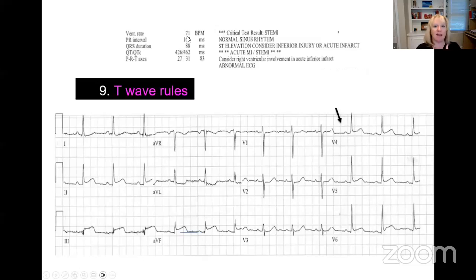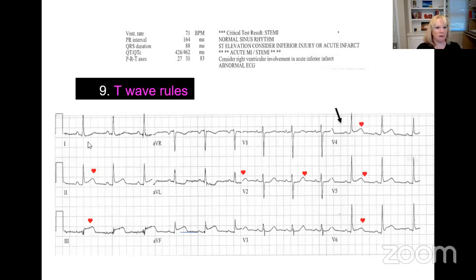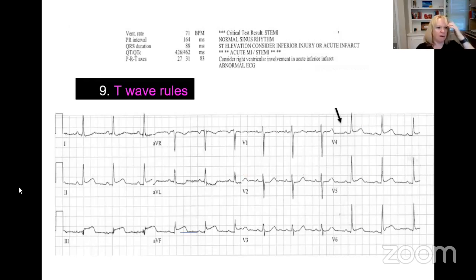Step nine is the T waves, which are also really important. The T wave rule: T waves should be upright in all leads except two. They should be inverted in AVR and in V1. In this EKG, V1 is actually upright, which is not normal. Every other lead should have an upright T wave — it shouldn't be too big and shouldn't be biphasic. The only two leads allowed to be inverted are AVR and V1.